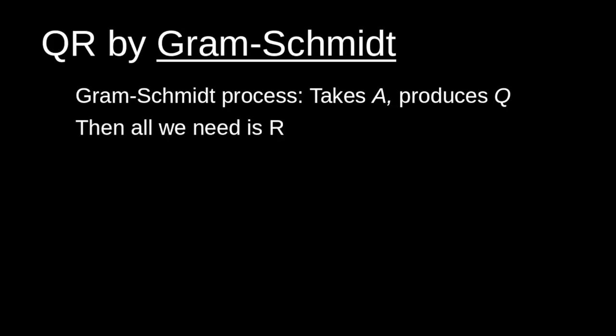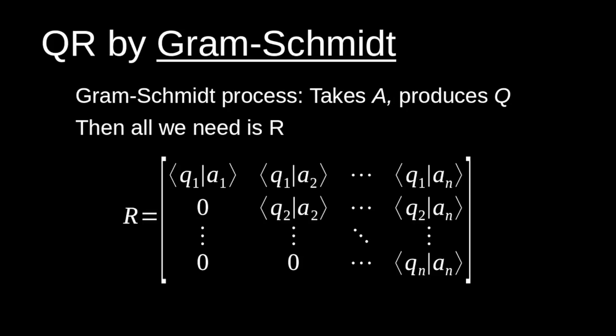So then all we really need to do to compute a QR matrix decomposition by the Gram-Schmidt process is just find a way of getting our R matrix. And we could do that really simply with this formula right here where we're going to compute a whole bunch of inner products between our Q matrix once we obtain it and our A matrix. We can slide them into the respective positions of our upper triangular matrix. And that is how we compute a QR matrix decomposition with Gram-Schmidt.